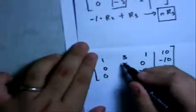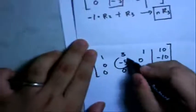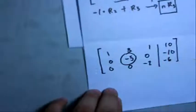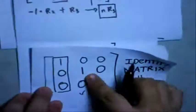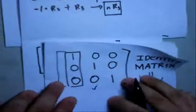Negative 1 times negative 10 is positive 10, plus negative 16 is negative 6. Now we're going to make the negative 5 into 1, just like the identity matrix requires.